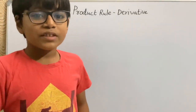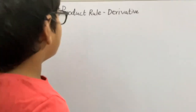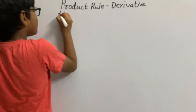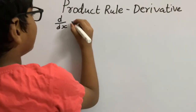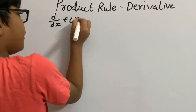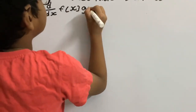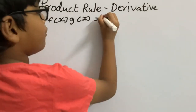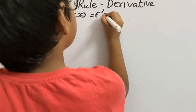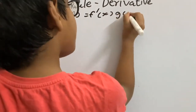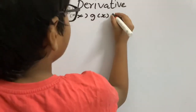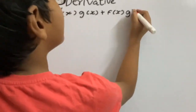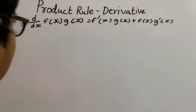Hi everyone, my name is Krishna Sai. We are going to prove the product rule. The product rule states that the derivative of f(x) times g(x) equals the derivative of f(x) times g(x) plus f(x) times the derivative of g(x). I am going to prove the product rule.